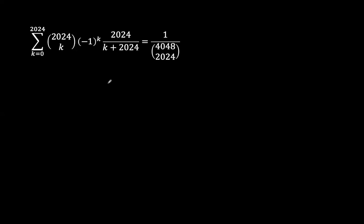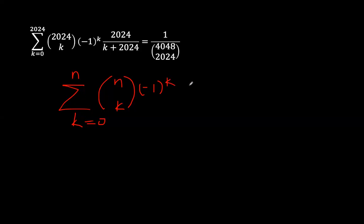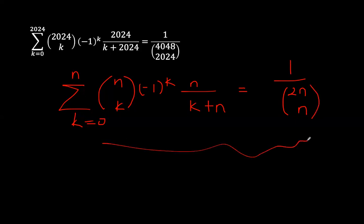This is interesting because we can deduce a general relationship: the summation from k equals 0 to n of C(n, k) times negative 1 to the power k, times n over k plus n, equals 1 over C(2n, n). This is a very interesting relationship we learned from this integration, where n equals 2024.